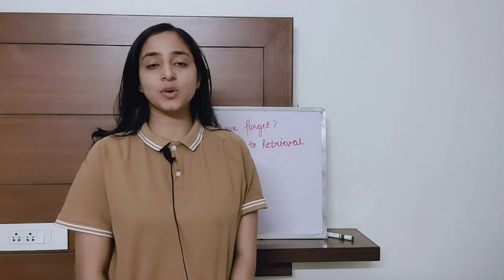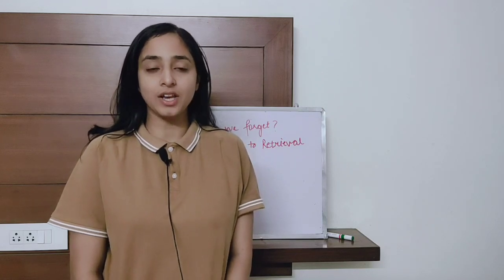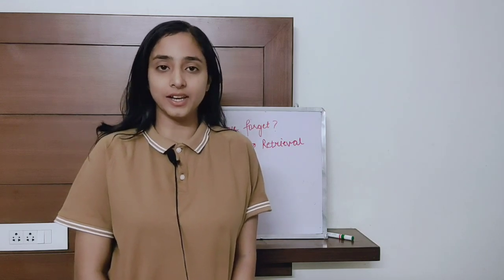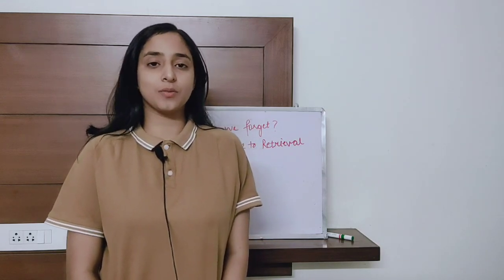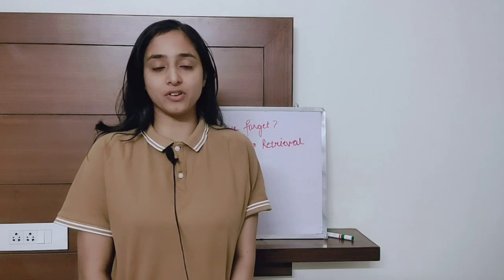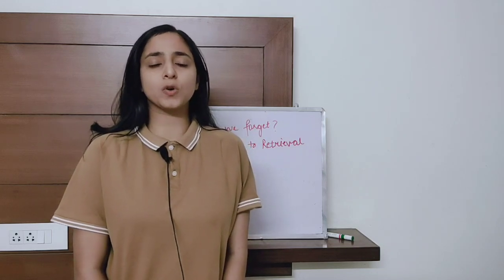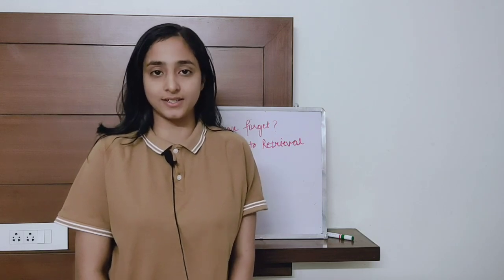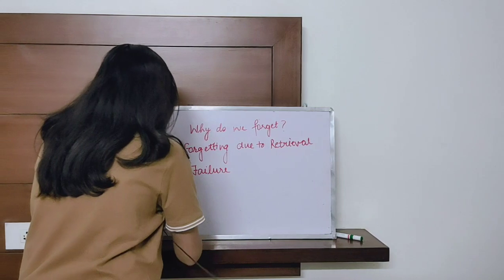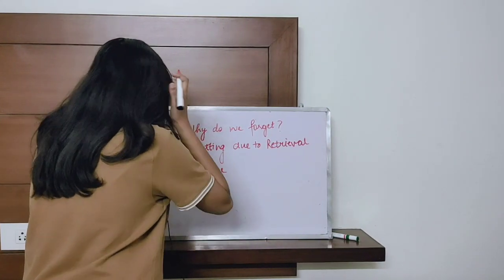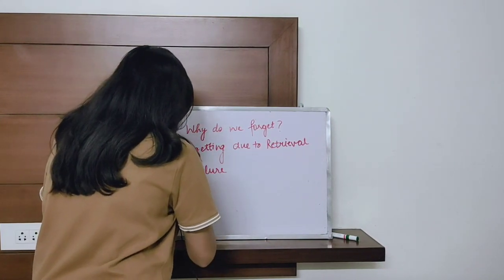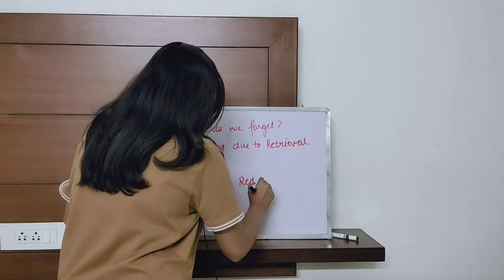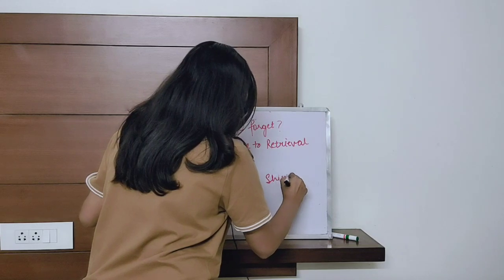The third theory is the theory of retrieval failure. This theory says that whenever we memorize something, we use some hints from our past knowledge to aid our subsequent learning. It is somewhat similar to the theory of interference, but here it focuses on cues. For example, if I'm asked to remember five words — dog, gold, red, shirt, and rose.